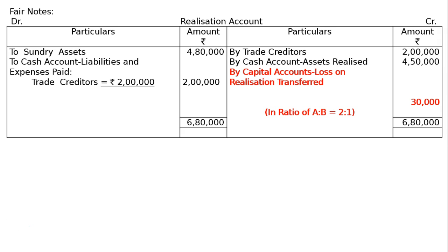We total the debit side — rupees 6 lakh 80,000 — carry it to the credit side, and find the difference of rupees 30,000. This is the loss on realization, transferred to capital accounts in the profit-sharing ratio of A to B, which is 2:1. A's share is rupees 30,000 × 2/3 = rupees 20,000; B's share is rupees 30,000 × 1/3 = rupees 10,000.